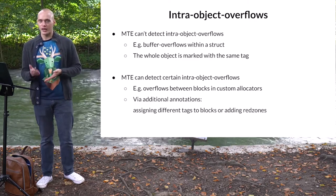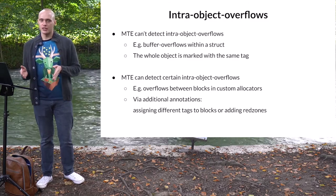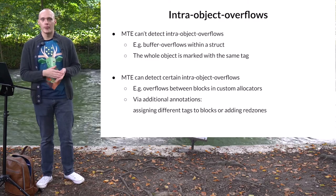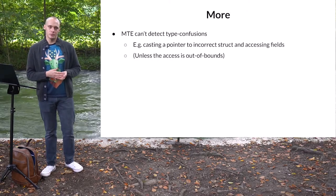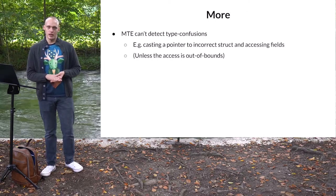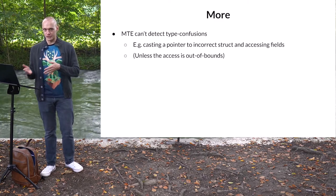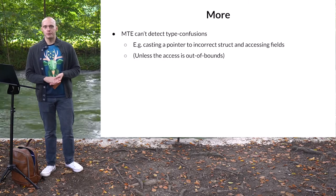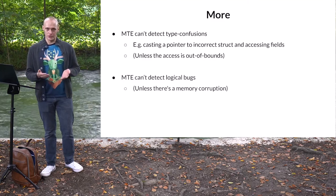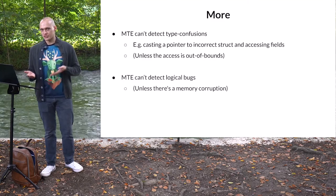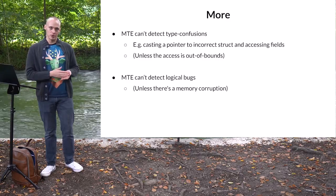What we can do here is add additional annotations into such drivers. These annotations would either assign a random tag to each block, or if that's not possible, at least add inaccessible red zones between blocks. One more bug type that MTE cannot detect is type confusion — like when the kernel casts a pointer to an incorrect structure type and then accesses its fields. This will not directly lead to a tag mismatch, unless the access goes out of bounds. Finally, MTE cannot detect logical bugs — missing privilege checks and stuff like that will remain exploitable, provided the bug is purely logical without any MTE-detectable memory corruption involved.